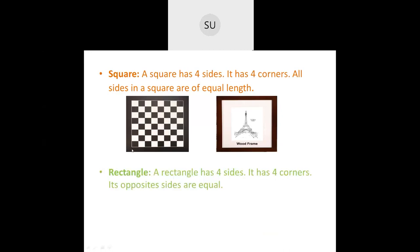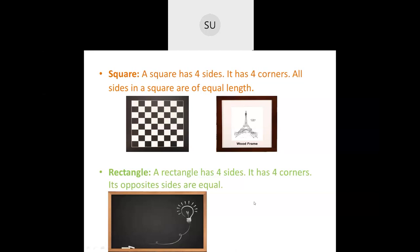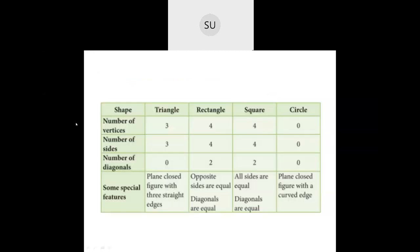A rectangle has four sides, four corners, and its opposite sides are equal. A blackboard and a door are examples of a rectangle. So the four main shapes we'll study are triangle, rectangle, square, and circle.